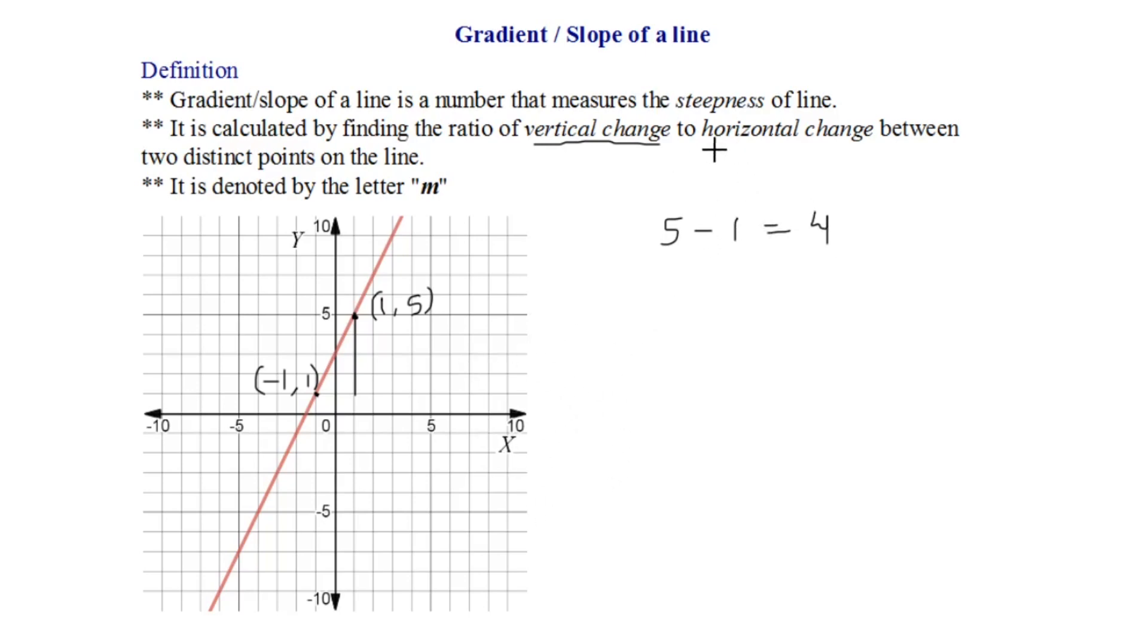Similarly let's find the horizontal change. The horizontal change would be the change in x coordinates, right? So that will be equal to 1-(-1) which is equal to 2. Let's take the ratio of vertical change and horizontal change. As you can see, gradient is denoted by the letter m. Hence m equals vertical change upon horizontal change which is equal to 2.